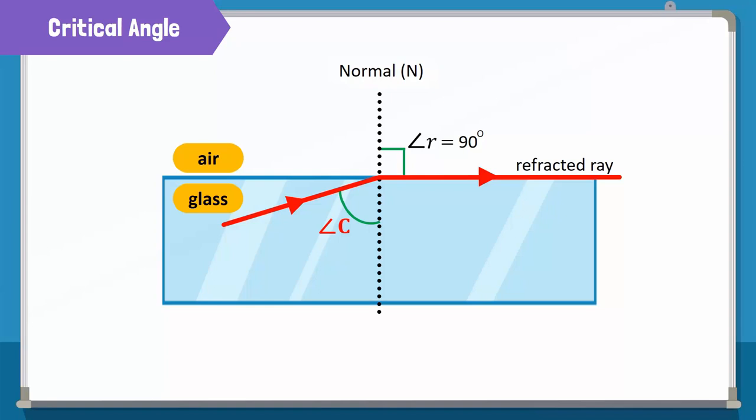The critical angle of glass is 42 degrees and that of water is 49 degrees.